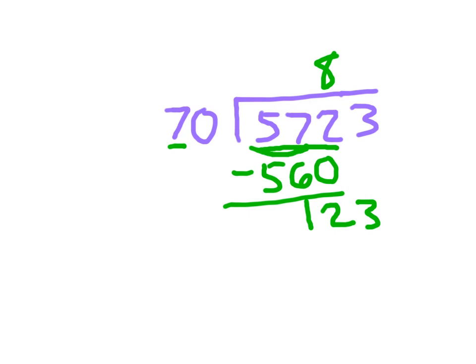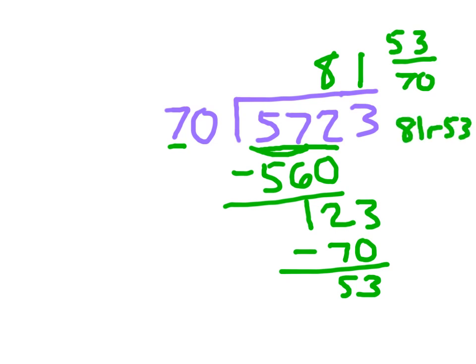123 divided by 70 is just 1, because 1 times 70 is 70, and 123 minus 70 is 53. At that point, our remainder is 53, and since 53 is a prime number, we can just leave it as 53 seventieths. Because 70 is not divisible by 53, 81 and 53 seventieths is our answer then. Or if we were able to use remainders, we would say 81 remainder 53. 5,723 divided by 70 is 81 remainder 53.